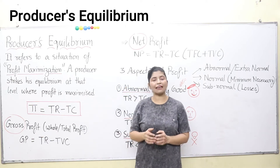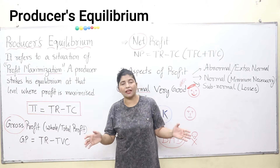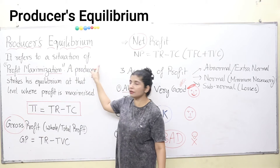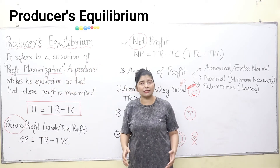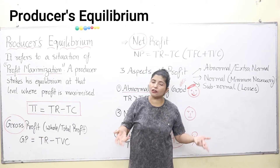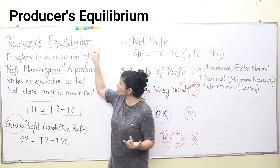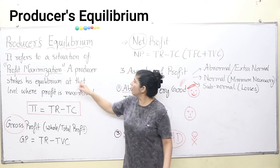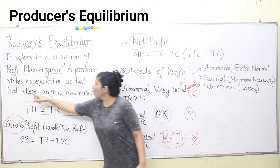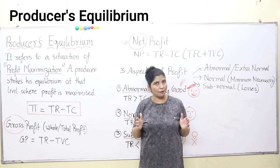The producer's equilibrium tells you that a producer is in equilibrium only when he earns profit. It refers to a situation of profit maximization, because why would anyone do any business if he or she will not earn profit? Equilibrium means happiness of a producer, and happiness of a producer lies in profit maximization. A producer strikes his equilibrium at that level where profit is maximized.